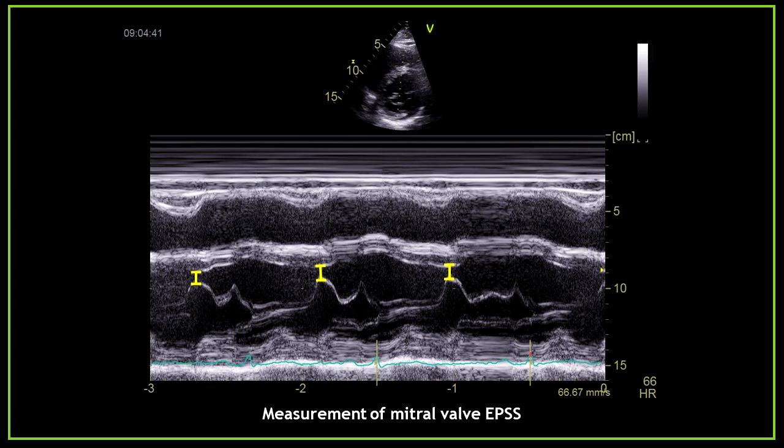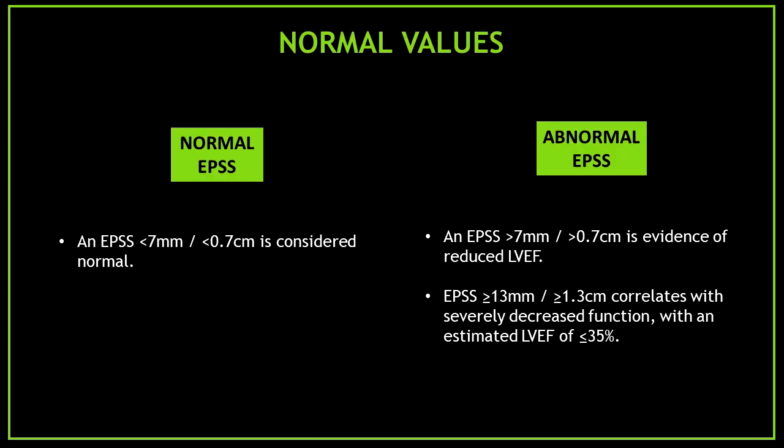Here you can see a few measurements of the mitral valve E-point septal separation. The normal values: an E-point septal separation less than 7 mm (0.7 cm) is considered normal. An E-point septal separation greater than 7 mm is evidence of reduced left ventricular ejection fraction. We cannot estimate exactly the severity of systolic dysfunction, but an E-point septal separation greater than 13 mm (1.3 cm) correlates with severely decreased function with an estimated left ventricular ejection fraction of around 35%.